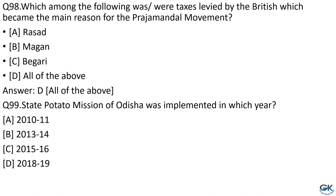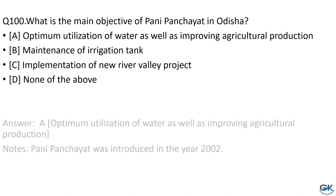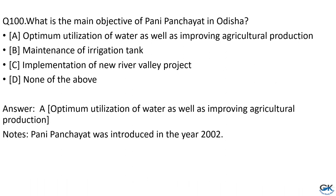Question No. 98: Which taxes levied by the British became the main reason for the Praja Mandal Movement? Option A: Rasad. Option B: Begar. Option C: Beggari. Option D: All of the above. The answer is Option D, all of the above. Question No. 99: State Potato Mission of Odisha was implemented in which year? Option A: 2010–11. Option B: 2013–14. Option C: 2015–16. Question No. 100: What is the main objective of Pani Panchayat in Odisha? The answer is Option A: optimum utilization of water as well as improving agricultural production. Pani Panchayat was introduced in the year 2002.